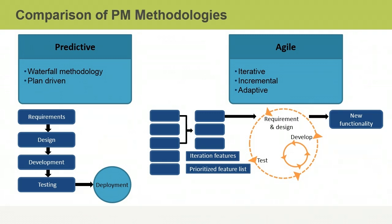Predictive life cycles are plan-driven, and change is not encouraged except as a way to prevent defects or to correct non-conforming project work. The time, cost, and scope requirements are determined as early in the project life cycle as possible. Then the project proceeds according to the plan. This methodology best describes traditional project management.